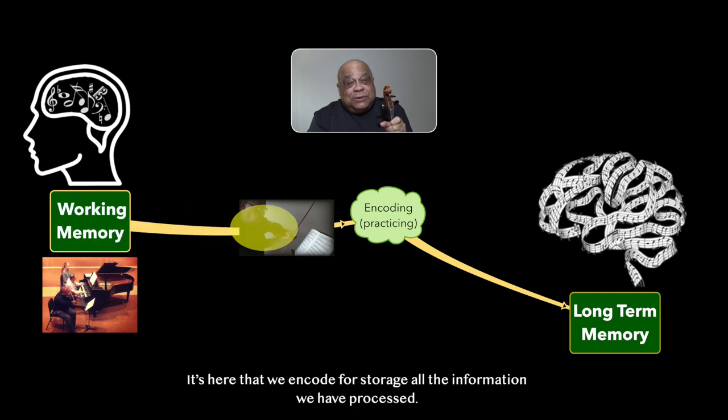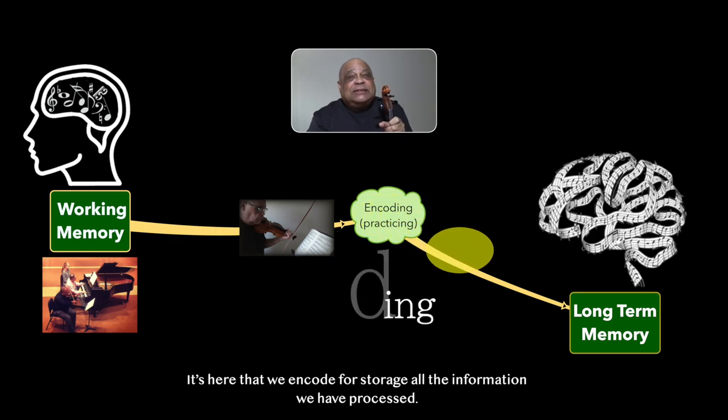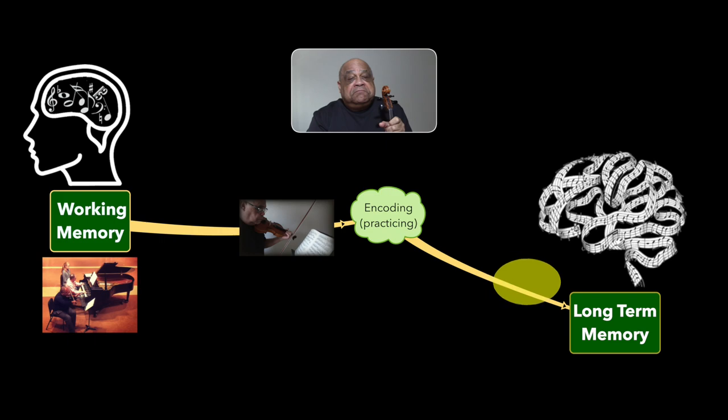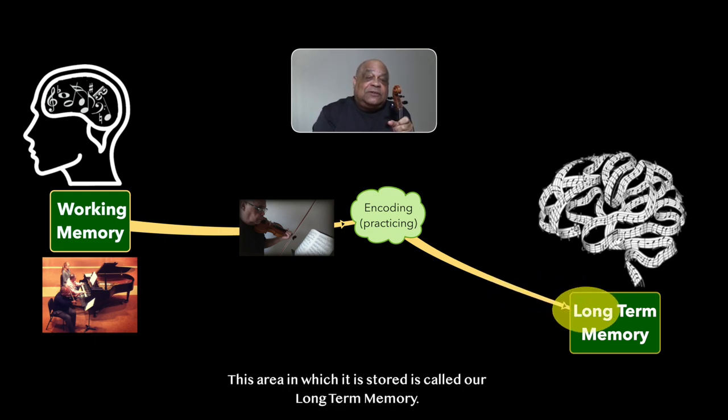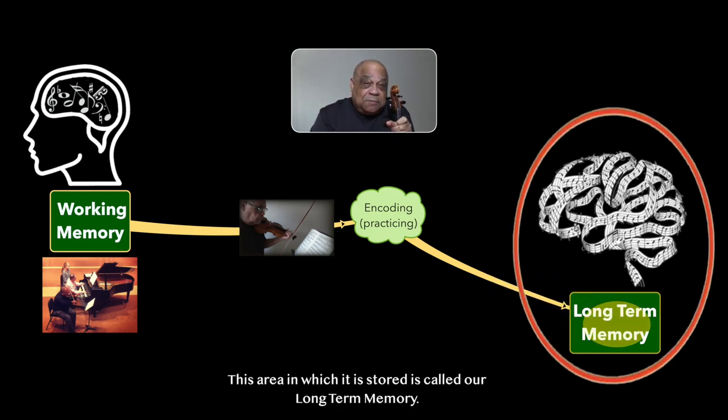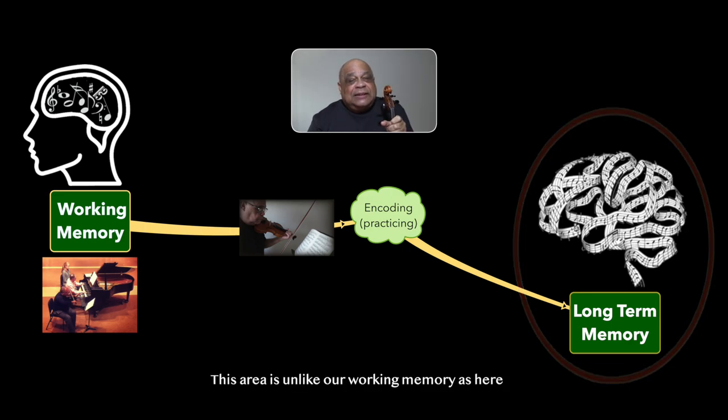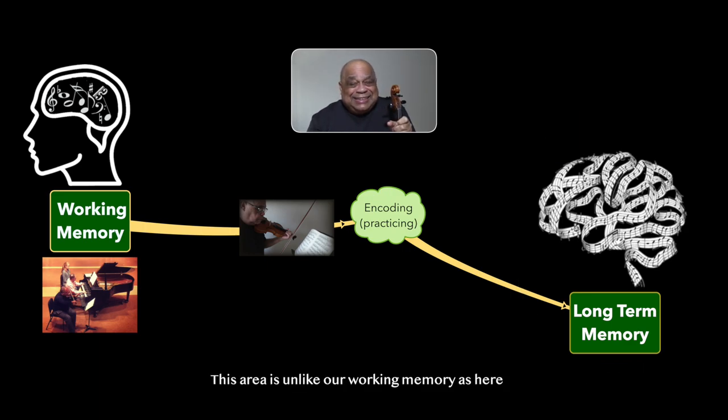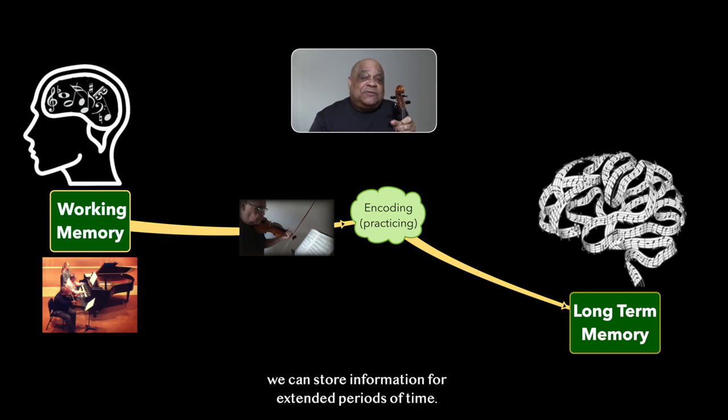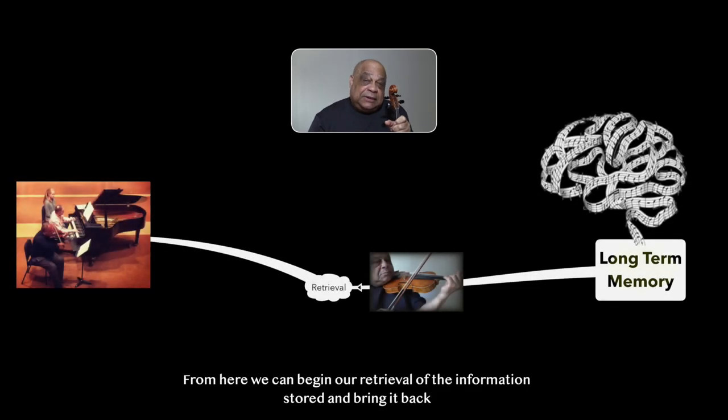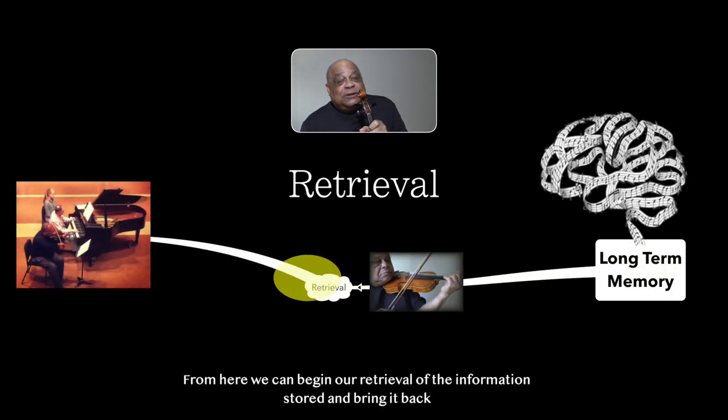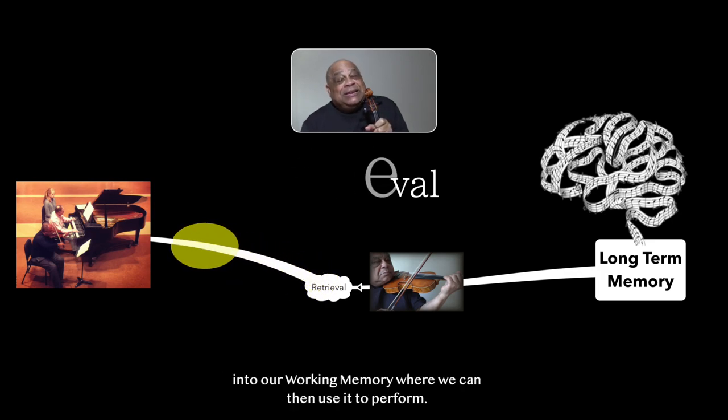This leads us to the next step in this journey. It's here that we encode for storage all the information we have processed. Next, this area in which it is stored is called our long-term memory. This area is unlike our working memory, as here we can store information for extended periods of time. From here, we can begin our retrieval of the information stored and bring it back into our working memory, where we can then use it to perform.